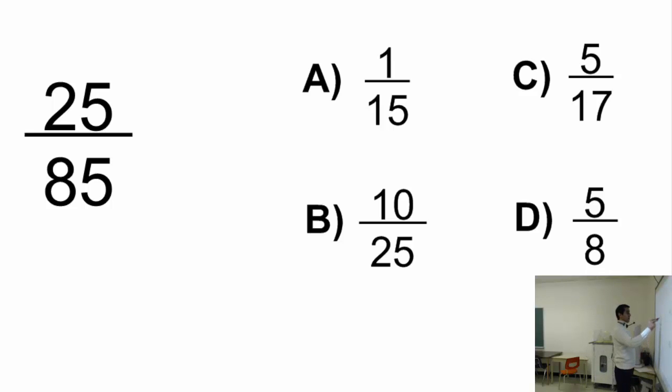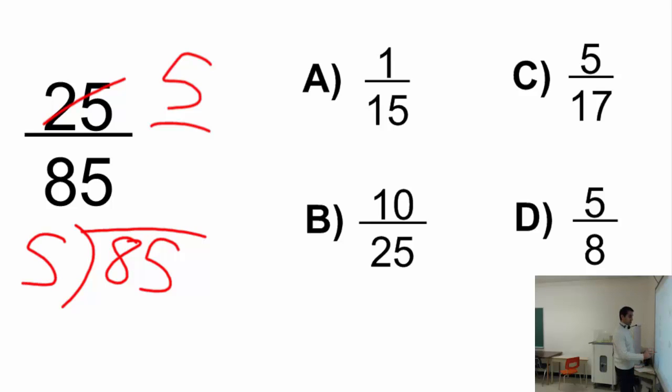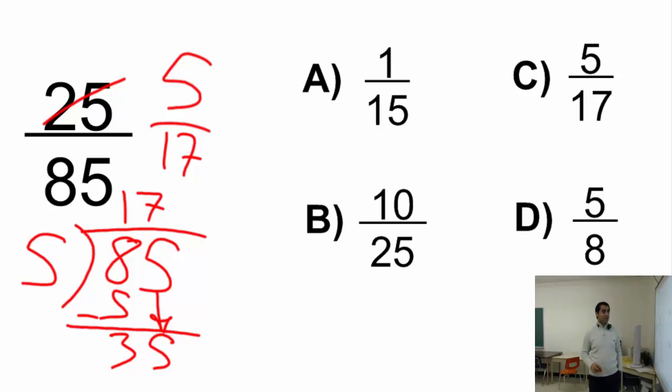25 divided by 5 will give you 5. And 85 divided by 5, I don't know, let's do the division. 85 divided by 5. There is just one 5 there. Subtract, this is 3. Then that comes down. In 35, there are 7 fives. That will give you 0. So this is going to be 17.